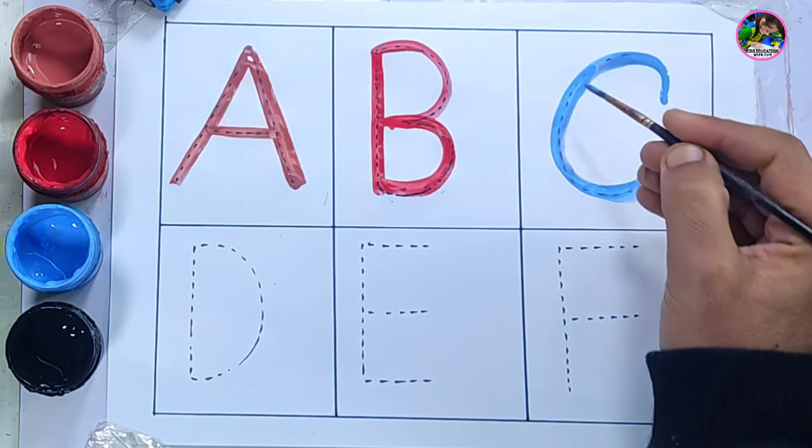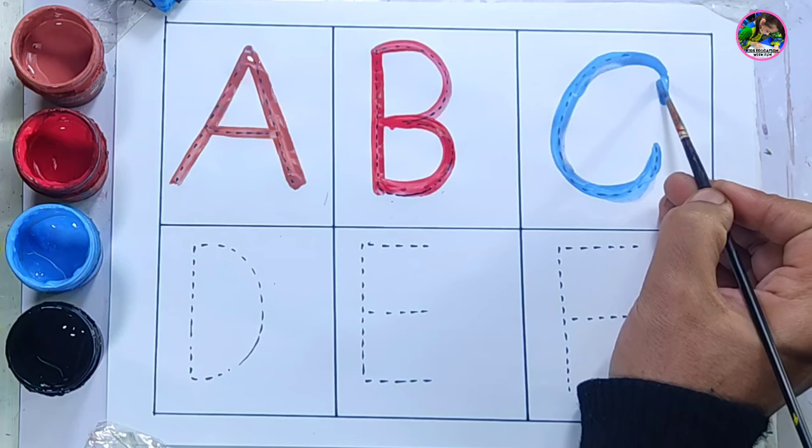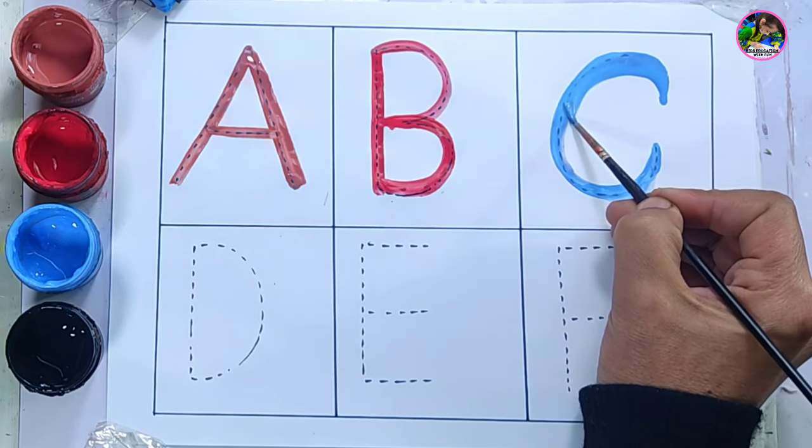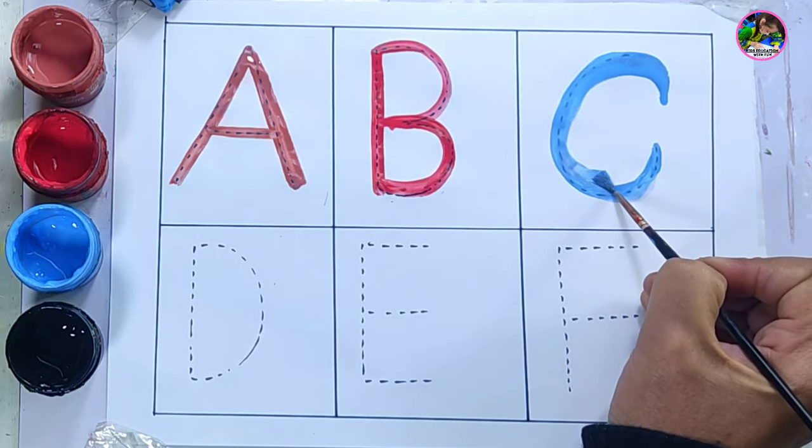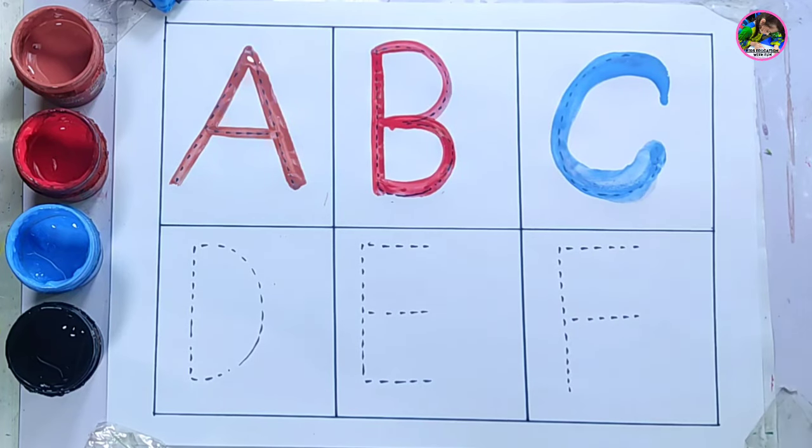You can draw with marker, dear children, or you can draw with watercolor. This is letter C. C is for cat and C is for cherries.